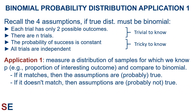This brings us to applications of the binomial probability distribution. The four assumptions must be true for the distribution to be binomial — the first two are usually trivial, but the third and fourth are trickier. One application is that we can measure an observed distribution of samples for which we know the probability of success, and compare it to the binomial predicted for that probability. If the distributions match, the assumptions are probably true — probability is constant and trials are independent. If they don't match, the assumptions are probably not true.